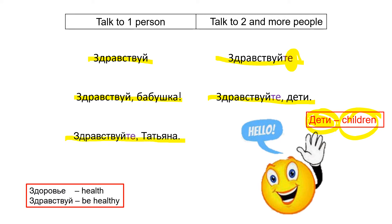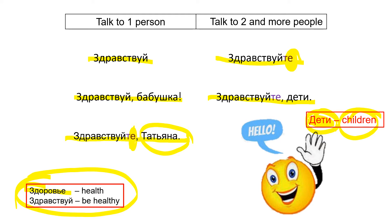Здравствуйте, Татьяна. Here Татьяна is one person, but I add the particle -те to make it polite. Здравствуйте, Татьяна. In Russian, здравствуйте means 'be healthy,' and it is also 'hello.' Every time Russians say hello, they wish health to each other. Look at these words: здоровье means 'health,' здравствуй means 'be healthy.' Do you hear the similar sounds? Здоровье — здравствуй.